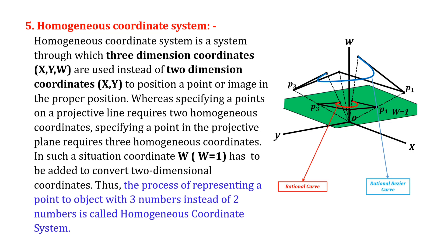In such a situation, an additional coordinate W (W=1) has to be added to convert two-dimensional coordinates into three-dimensional coordinates. Thus, the process of representing a point or object with three numbers instead of two numbers is called homogeneous coordinate system.